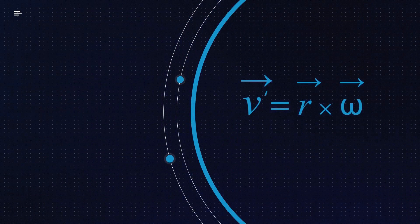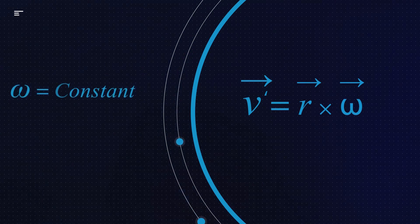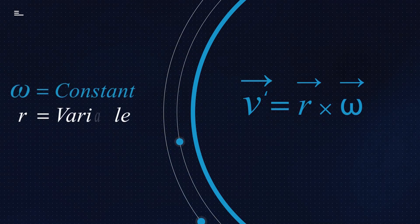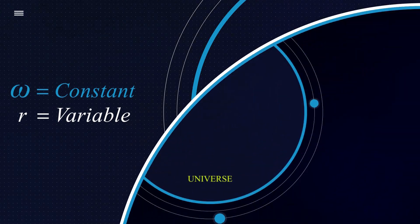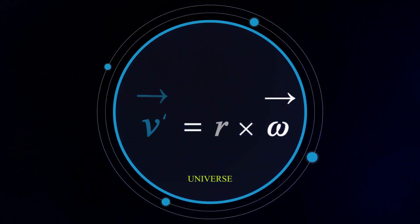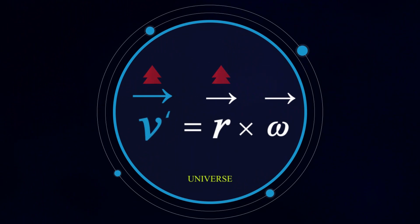v prime is equal to r cross omega. It should be noted that since there is no external force in the rotation of the universe, the angular velocity is always constant. Thus, we conclude that our tangential velocity depends on the variable r.